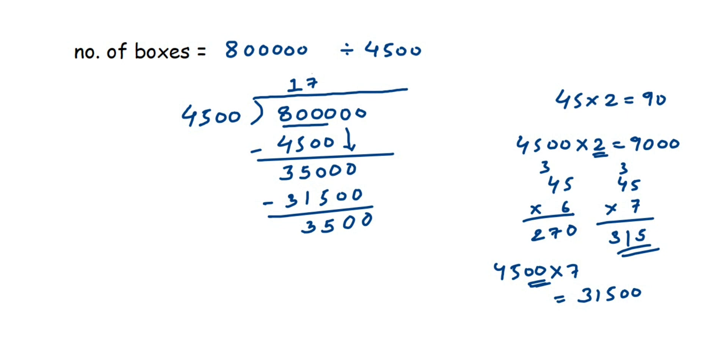I'm going to take 7 again. Drop this zero, so we have 35,000 here. Again, 7 times is 31,500, subtract it, you will get the same remainder, that is 3500. So you can see how many boxes can be loaded—we can load 177 boxes with the weight 4 kg 500 grams, and 3500 grams are still left out.